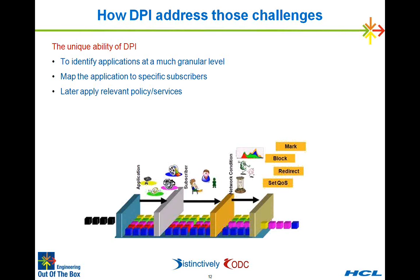So far we have seen the major challenges: traffic explosion, how it drives costs and pushes down revenues. We've also seen the internet value chain, who is capturing more value, and the position of service providers in that chain. We've seen the current scenario, the scenario for DPI, and that service providers currently have a B2C revenue model. Now we're trying to focus on a two-sided revenue model — both B2C as well as B2B.